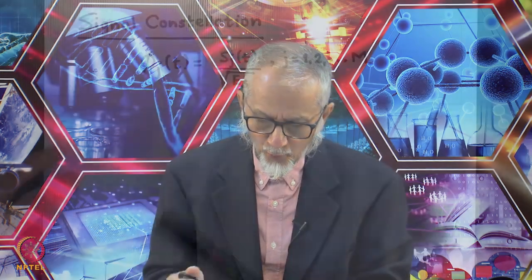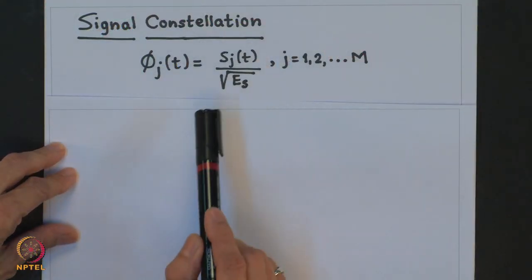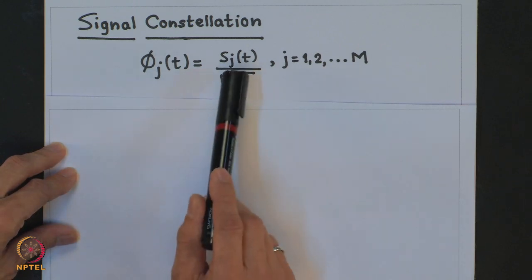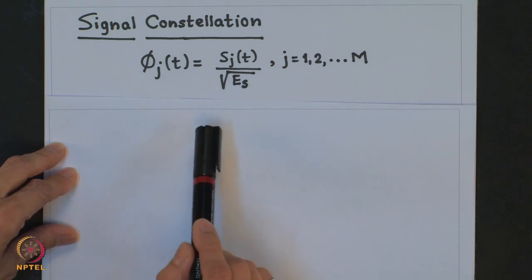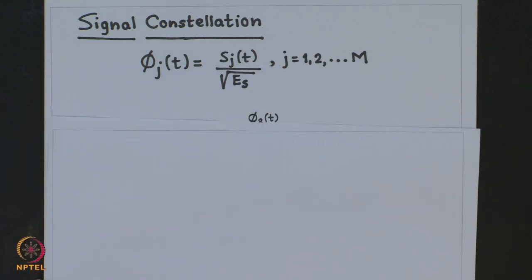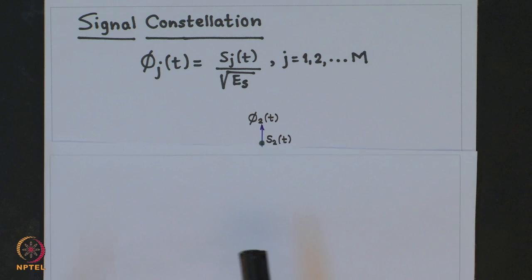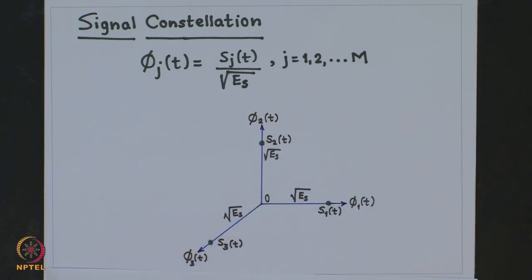Since the signal set chosen for M-ary FSK is an orthogonal set, the natural choice for the basis signals to get the signal constellation would be to use the signals in the message signal set directly, after normalizing with the energy of each signal which is E_s, the same for all signals in this set. Once we have this orthonormal basis, we can obtain the signal constellation for M-ary FSK — here is an example for the case of M equal to 3.